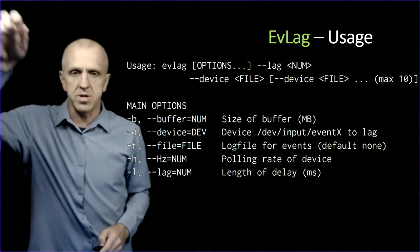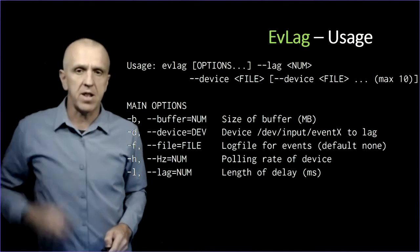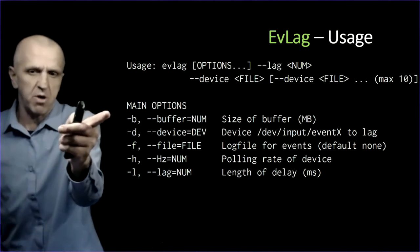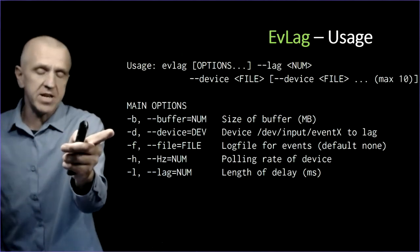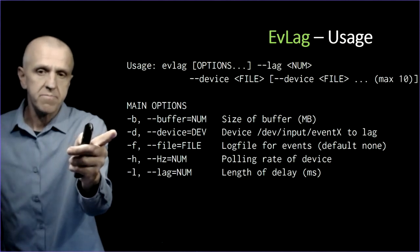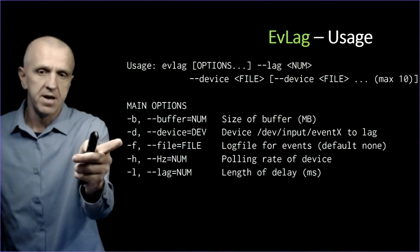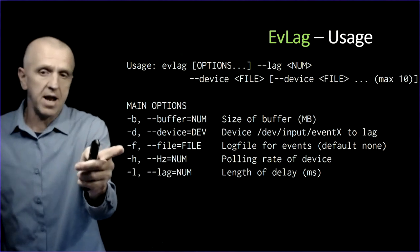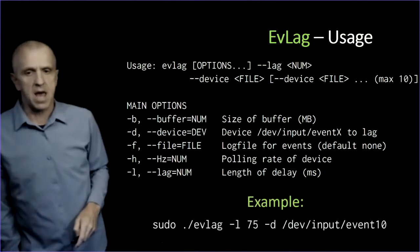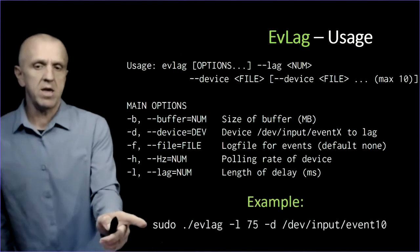This shows an example of EvLag usage. You can specify the buffer size. The default works well for almost all cases. This is the device you want to lag, the device name, the dev/input/event. You can log to a file as indicated. This is the polling rate that you might want, and that's how much lag to add in milliseconds.